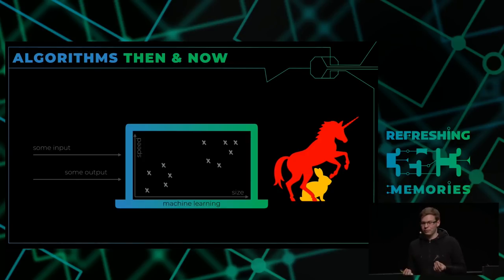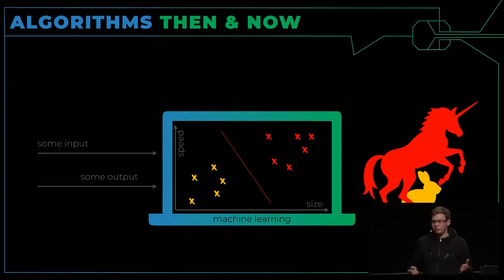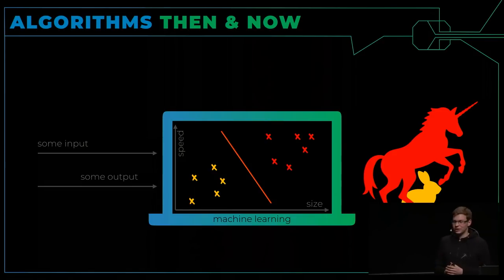Jetzt brauchen wir Trainingsdaten, also Eingabe — Pärchen von Geschwindigkeit und Größe. Und ich brauche auch Informationen über den Output, den ich dafür sehen will, also in dem Fall die Klasse: Einhorn oder Hase. Wir suchen ein statistisches Modell, sodass wir diese beiden Klassen auseinanderhalten können. Hier können wir ein sehr einfaches statistisches Modell verwenden — einfach eine gerade Linie. Der Lernprozess findet heraus, wo wir genau die Gerade hinlegen wollen in diesem Feature-Space. Da kommt dann die orange Linie raus, genau in der Mitte zwischen Einhorn und Hase.